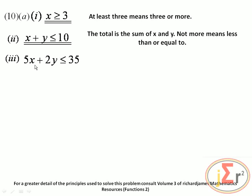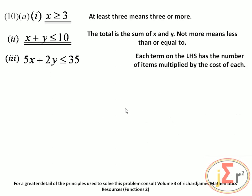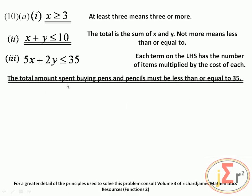The cost of each pen is $5 and the cost of each pencil is $2. Each term on the left-hand side is the number of items multiplied by the cost. Adding these products gives the overall cost. So the total amount spent buying pens and pencils must be less than or equal to $35.